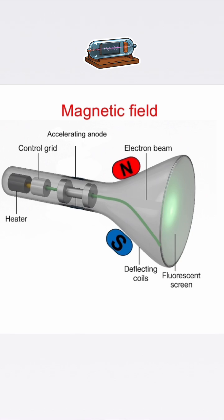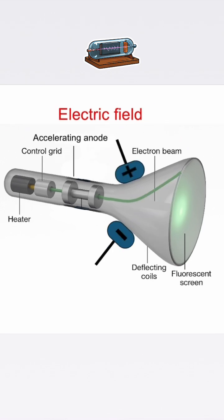Then Thompson tested the beam with an electric field by placing charge plates around it. When he turned on the electric field, the beam bent toward the positive plate, confirming again that the beam was made of negatively charged particles.